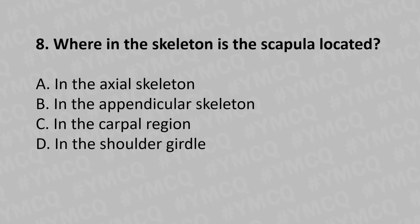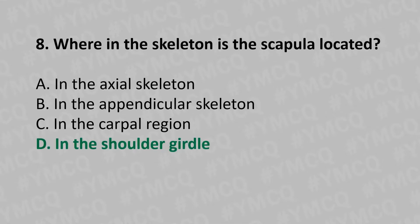Moving to our eighth question: Where in the skeleton is the scapula located? Option A: in the axial skeleton, Option B: in the appendicular skeleton, Option C: in the carpal region, Option D: in the shoulder girdle. The answer is Option D: in the shoulder girdle.